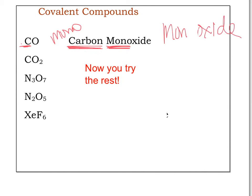Have you ever thought about the difference between carbon monoxide and carbon dioxide? Here we have C with only one carbon, so we could say monocarbon, but we leave the mono out since it's the first element and just call it carbon. For the second element, there are two oxygens, and the prefix for two is 'di,' so we call it carbon dioxide. Now you can see the difference between carbon monoxide and carbon dioxide.